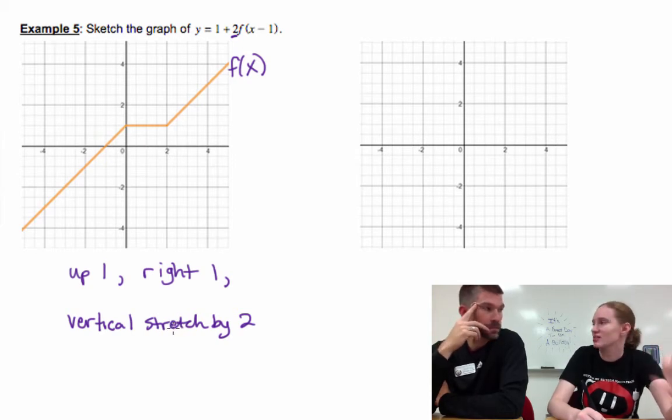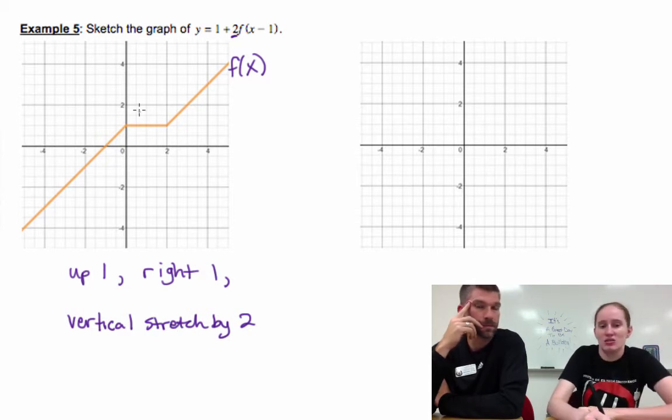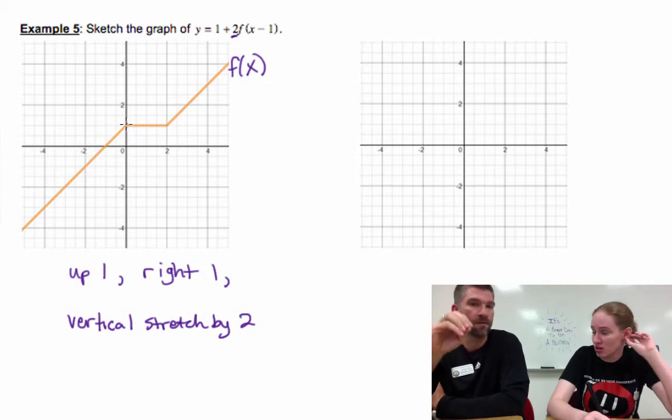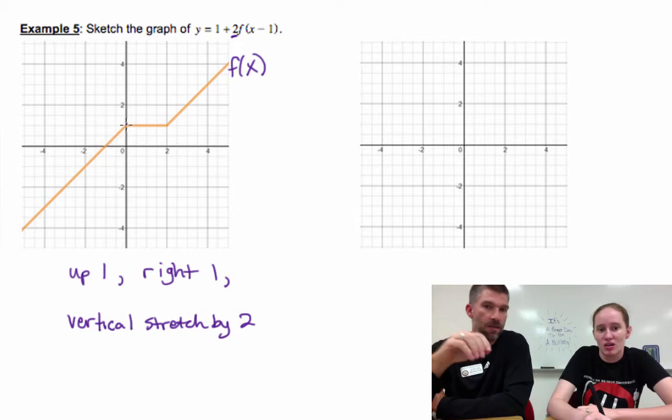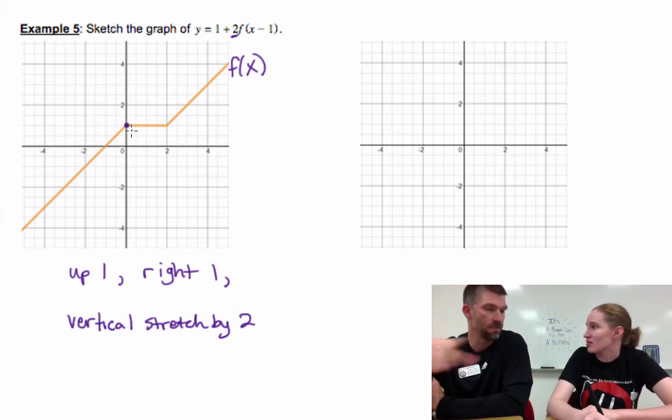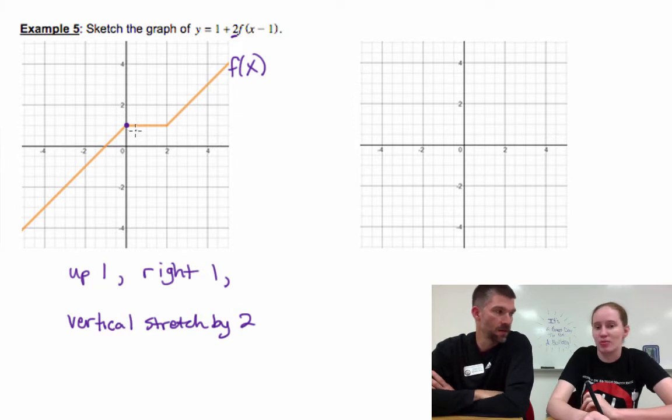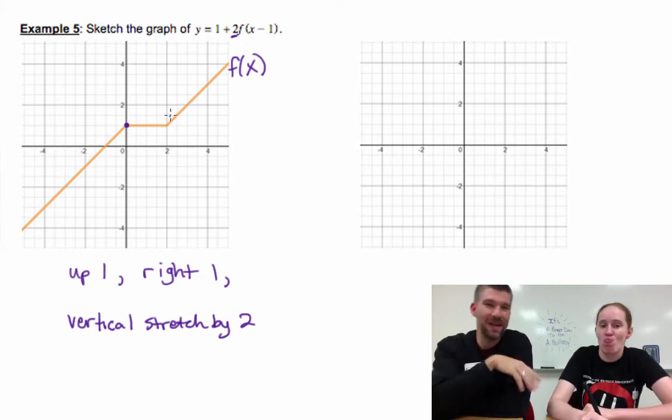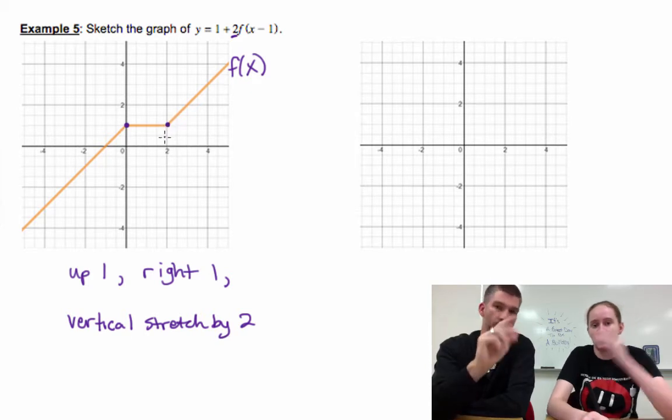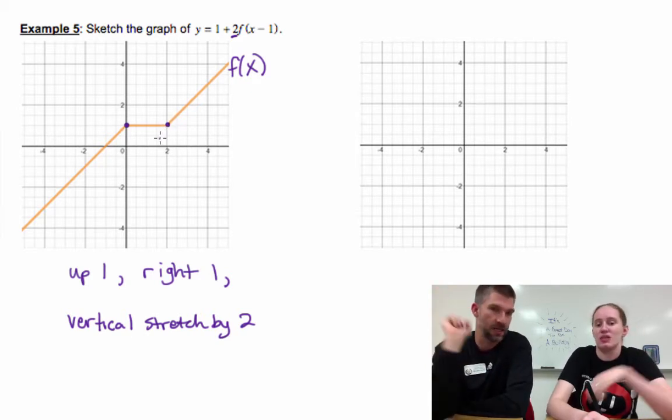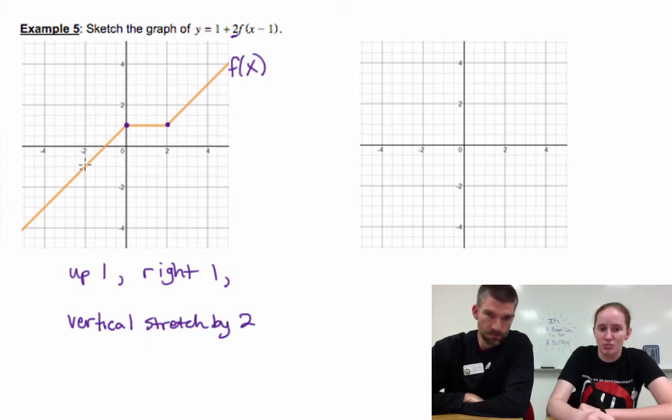The only things that conflict are our vertical stretch by two and up one. Which one needs to happen first? The one that's closer to our function, which is the two. We're multiplying our function by two first, then we're moving up one. Think about the order of operations: multiply first, add second.